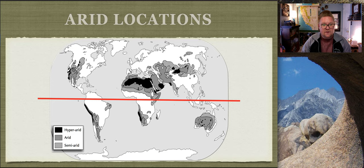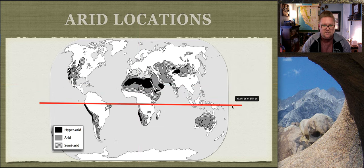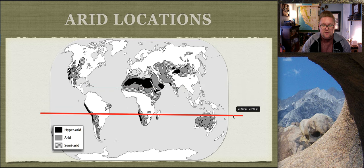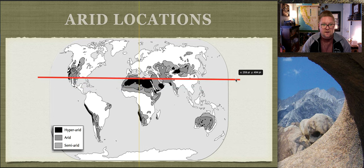Looking at a BBC aridity map, with a red line along the equator, you can see that there are correlations between latitude and aridity. Moving the line up and down shows it's perpendicular to the distribution of arid zones. There are definitely correlations around the tropic regions, and along the equator where we know it rains a lot.